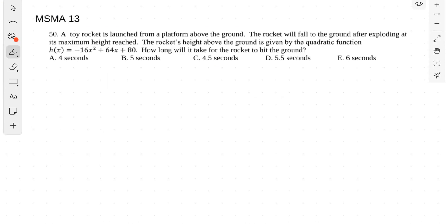So we're at question 50. This is a word problem. The main thing we should get from this is the rocket will fall to the ground after exploding at its maximum height. The rocket's height above the ground is given by the quadratic function, which is important. The question is asking how long will it take for the rocket to hit the ground.